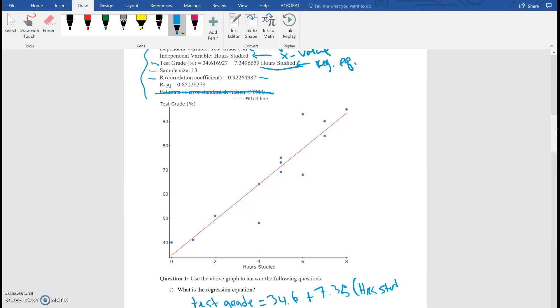Sorry, if you hear laughter, I have friends over. So I'm trying to do these. Okay, so we have test grade equals 34.6 plus 7.35 times hours studied. So this is basically what you need to write.